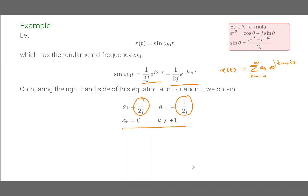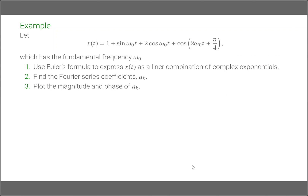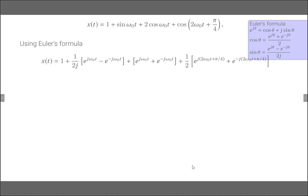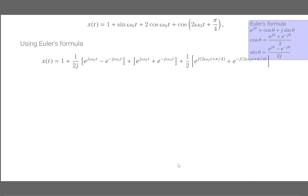Without using the integration formula, by observing the signal we obtained the Fourier series coefficients. Now let us look at this example: x(T) equals 1 plus sine(omega-naught T) plus 2cos(omega-naught T) plus cos(2·omega-naught T plus π/4), which has fundamental frequency omega-naught. Use Euler's formula to express x(T) as a linear combination of complex exponentials, then find the Fourier series coefficients A_K and plot their magnitude and phase.